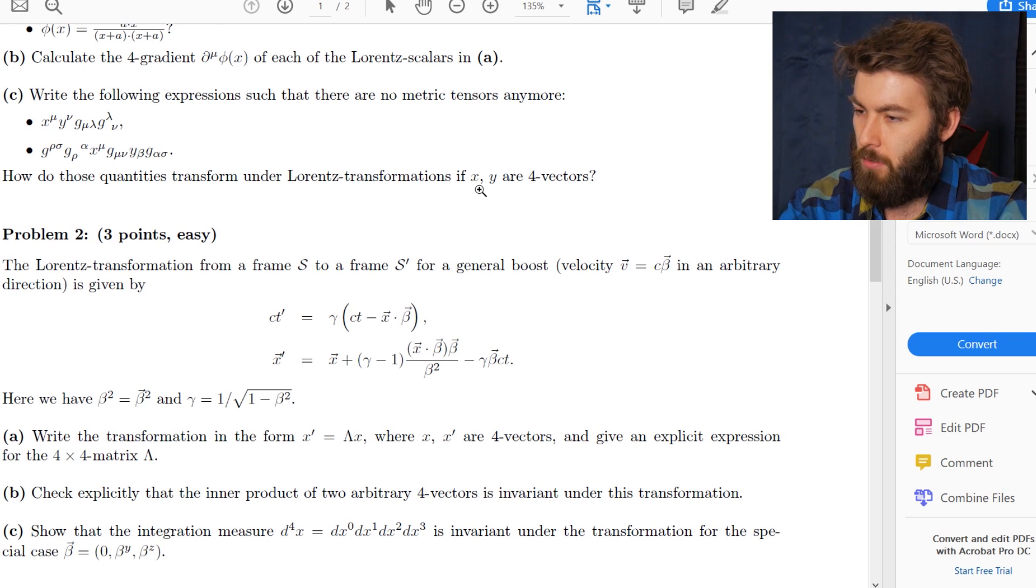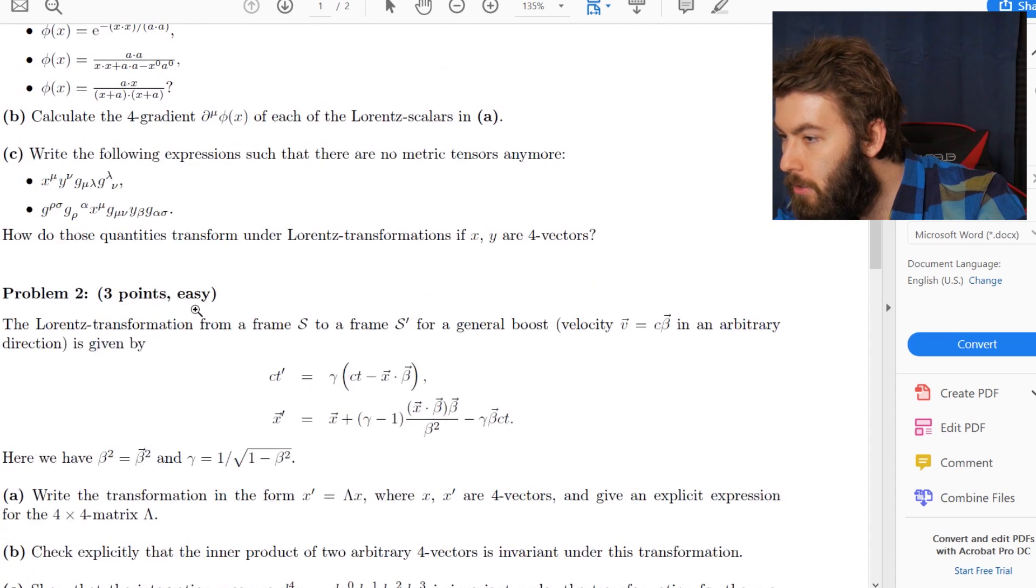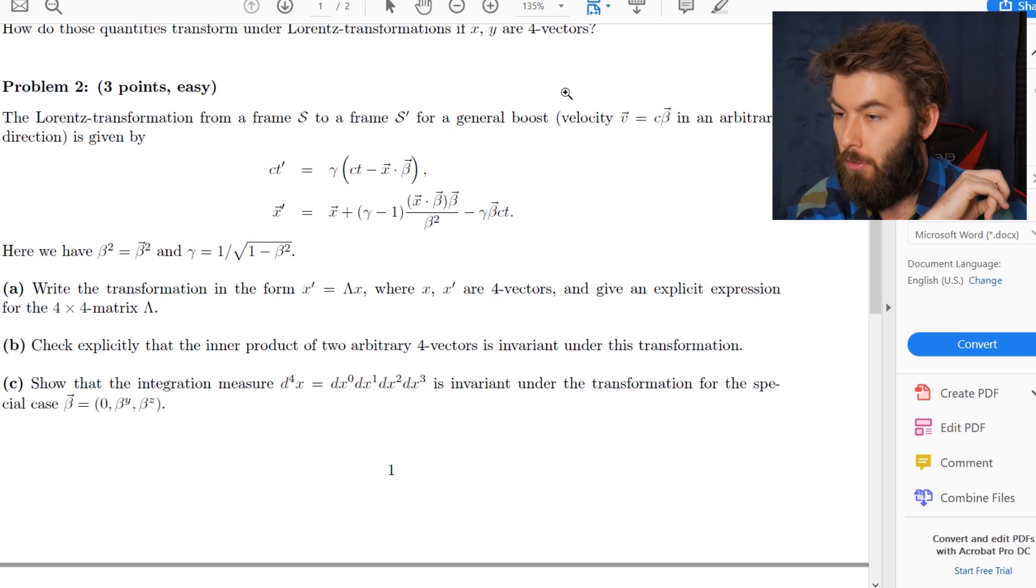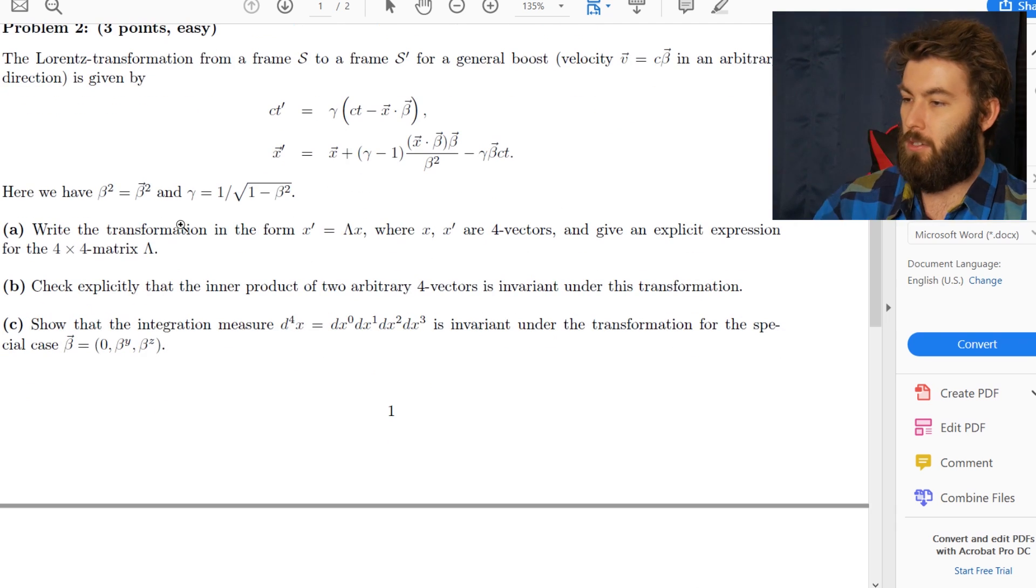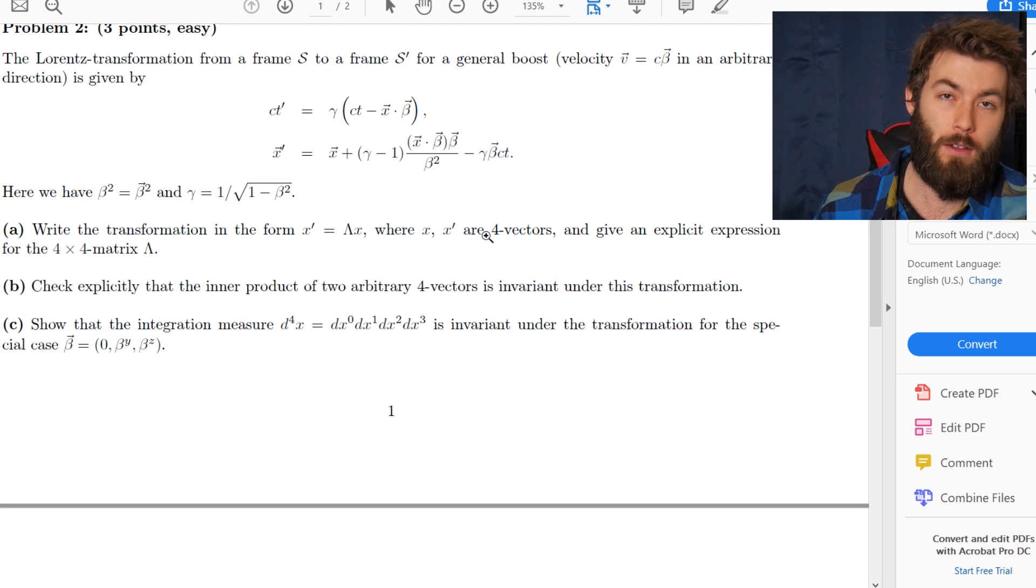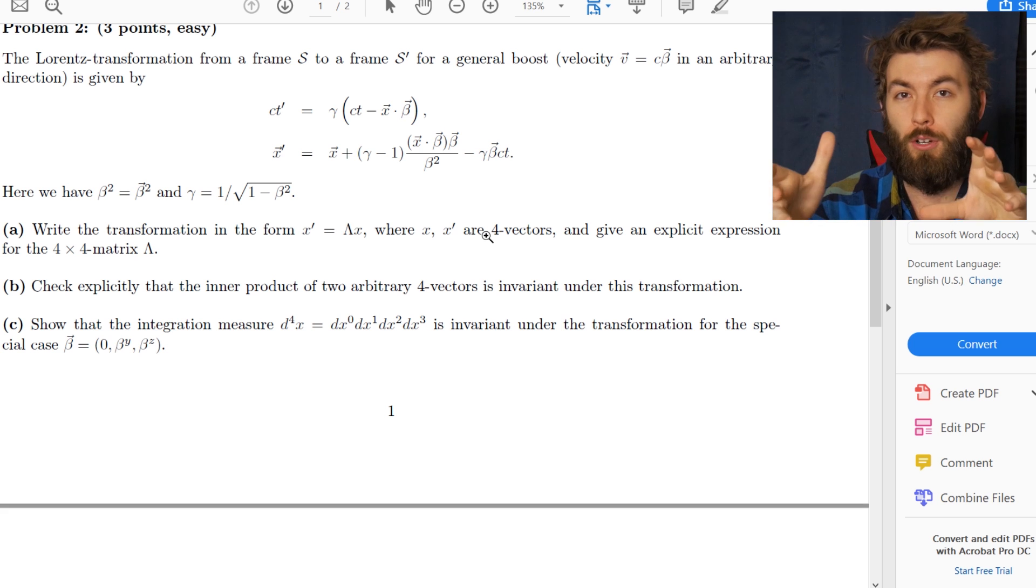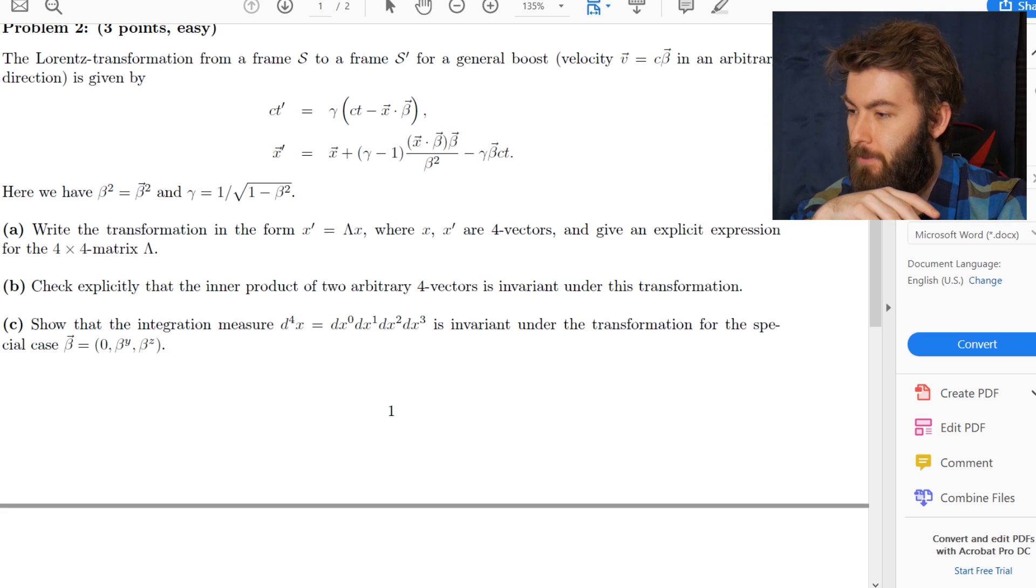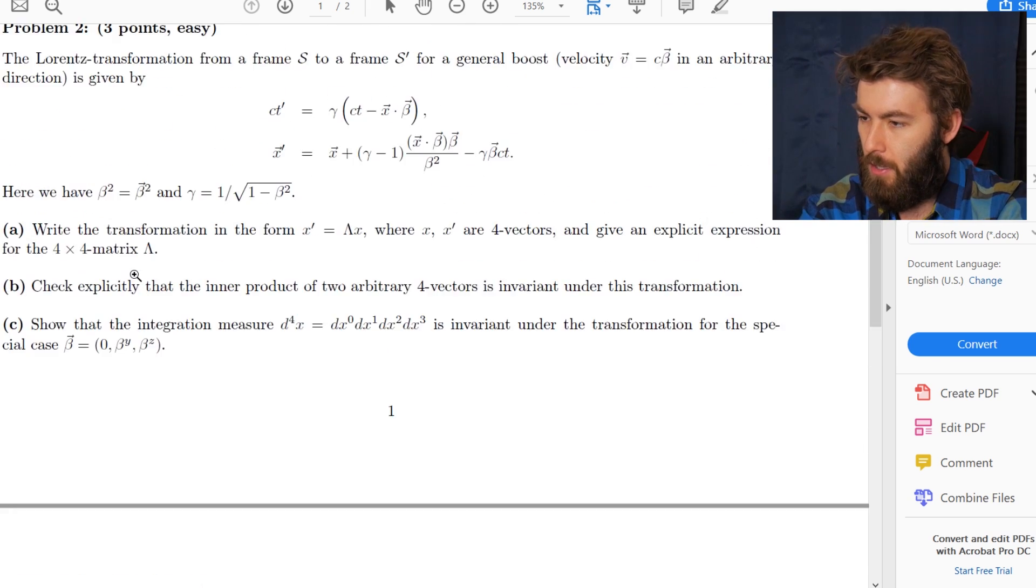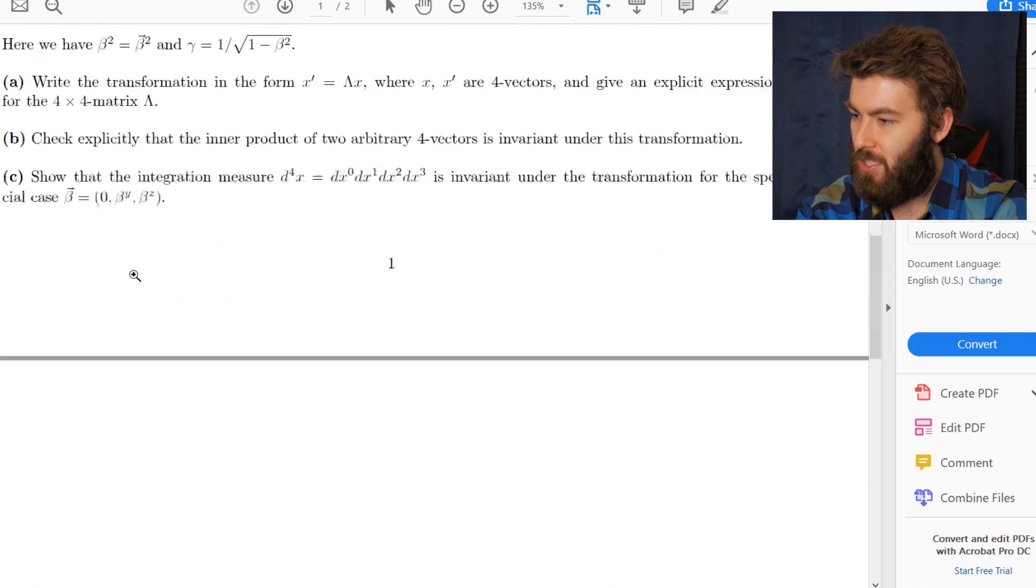How do these quantities transform under Lorentz transformation if they are four vectors? Lorentz transformation from a frame s to a frame s prime for a general boost of an arbitrary direction is given by the Lorentz transformation. Check explicitly that the inner product of two arbitrary four vectors is invariant under this transformation. Show that the integration measure d4x is invariant. That actually all seems really easy.